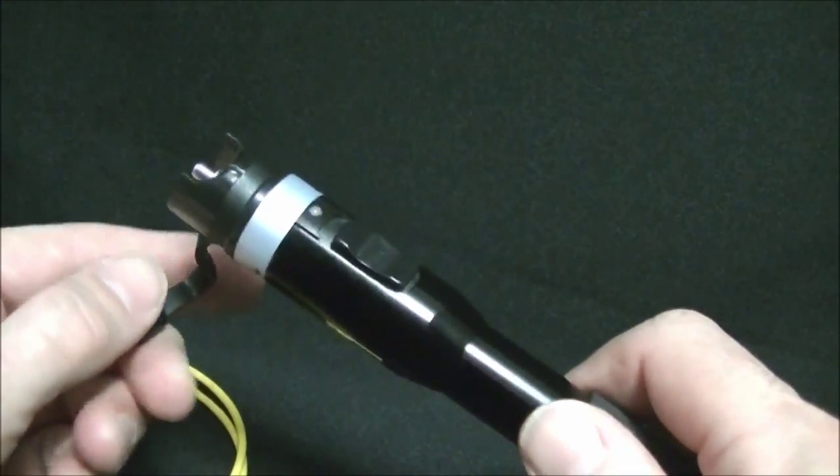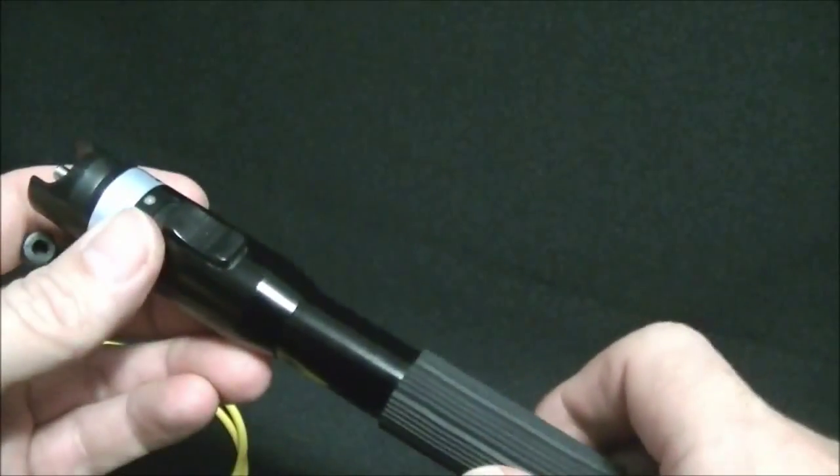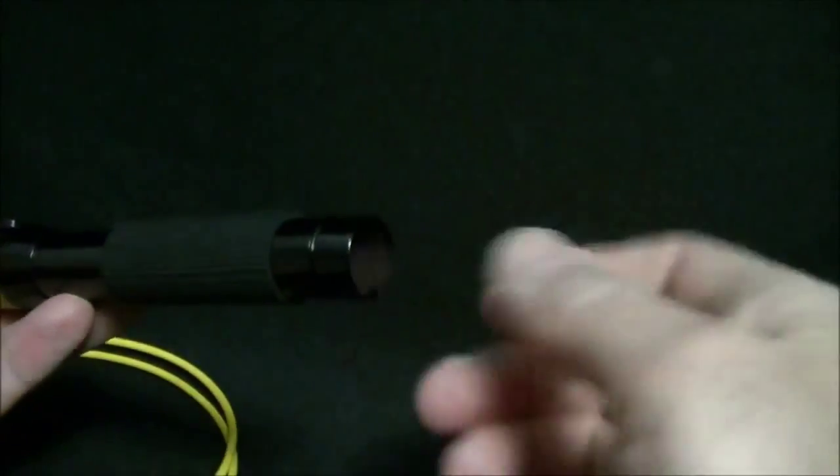The 180XL runs on two AA batteries and they're loaded into the back compartment here.